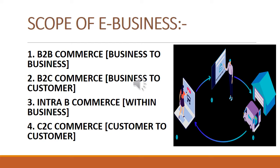Now, let's come to the scope of e-business. In e-business there are four terms used. First is B2B — business to business — in which a businessman does transactions with another businessman. Second is B2C — business to customer — in which a customer purchases from a business. Third is intra e-commerce. Fourth is C2C — customer to customer — where customers sell or purchase products from each other. For example, on sites like OLX, customers sell their old products to other customers.